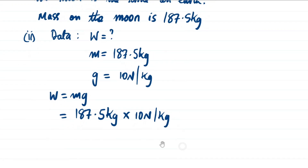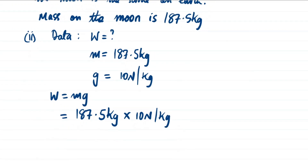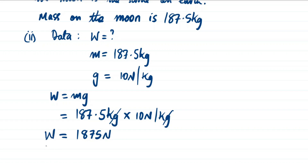Multiplying 187.5 by 10 gives 1875. The kg units cancel, leaving newtons. So the weight on earth is 1875 newtons. That is our final answer for part (b)(ii).